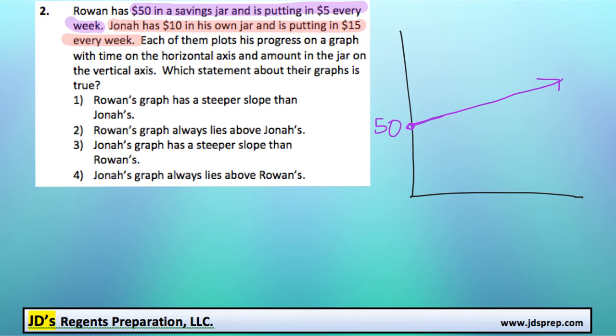And then Jonah starts with $10 in his own jar, so that's going to be down here. And he's putting $15 in every week, so his is going to be increasing at a faster rate, so maybe something like that. All right, now let's take a look at these four options and see which one of these is true.